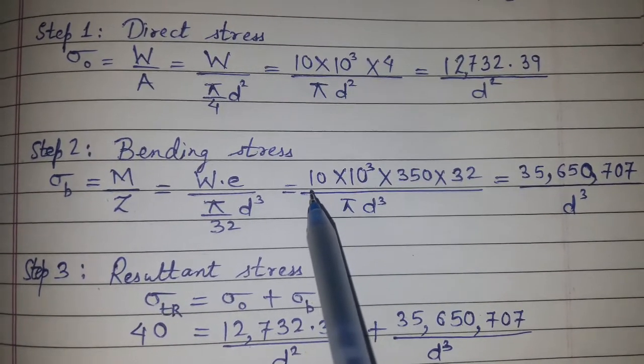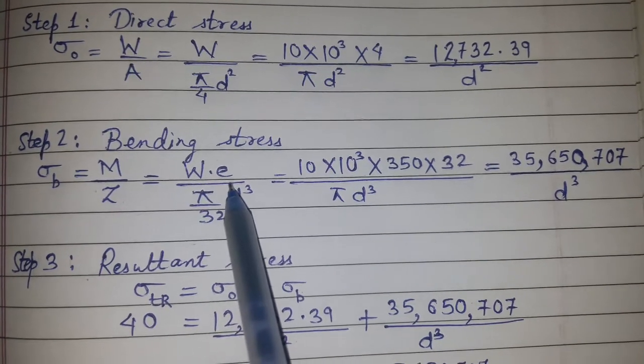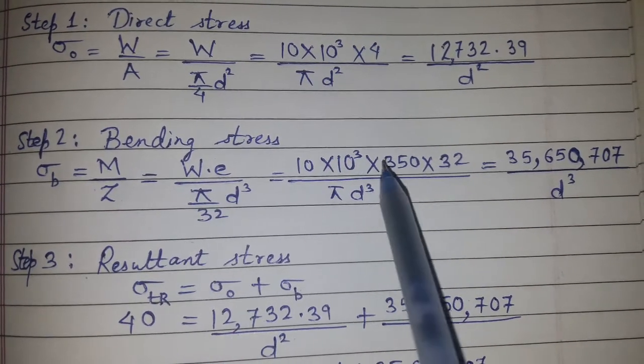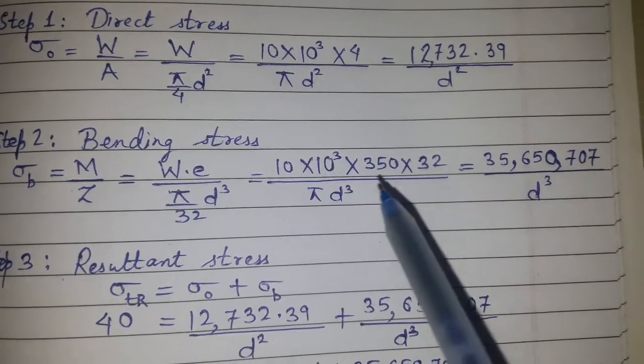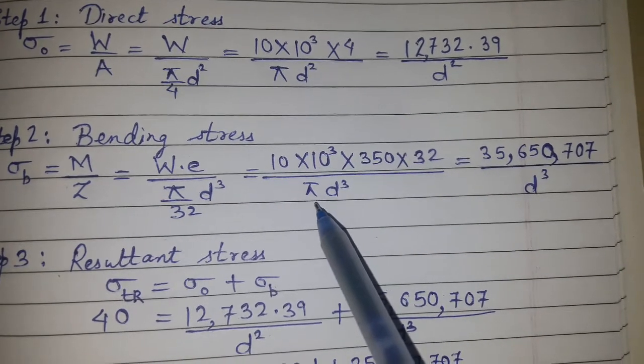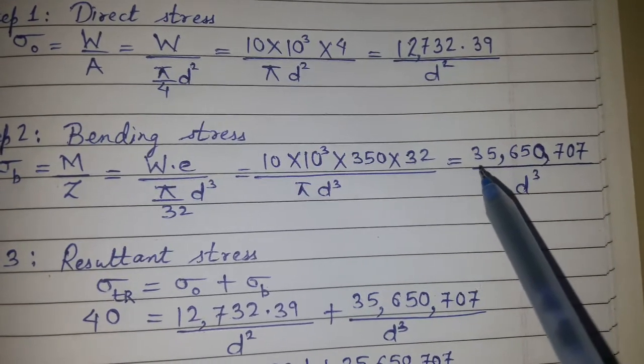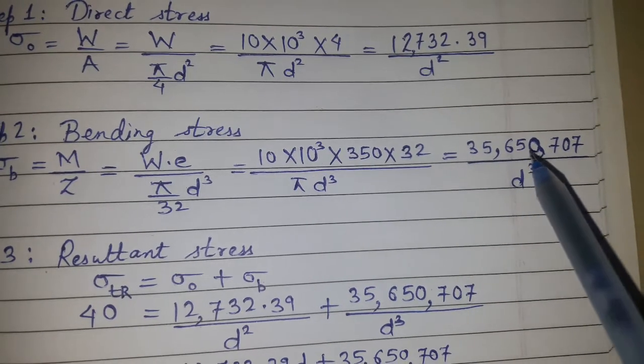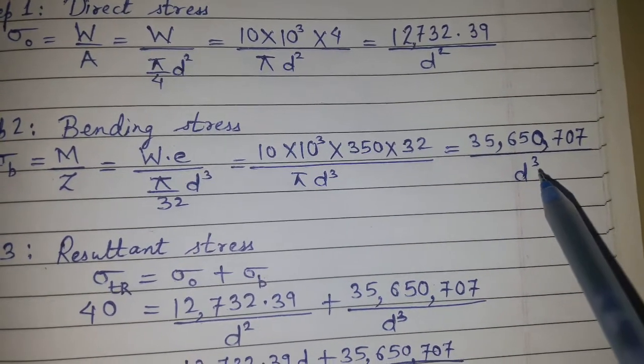When we substitute the values of W and e, with 32 in the numerator, and calculate with π, we get σ_b = 35,650,707/d³.